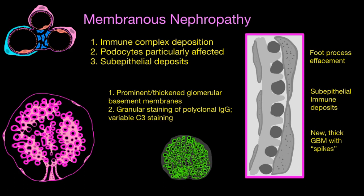We're still talking about diseases that can cause nephrotic syndrome, and the next important one is membranous nephropathy. This is a glomerular disease that involves immune complex deposition. Podocytes are particularly affected in this disease, and these immune deposits tend to arise in the sub-epithelial layer — so under the podocytes is where they deposit.